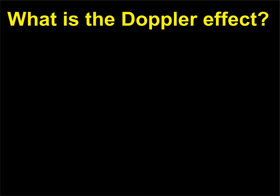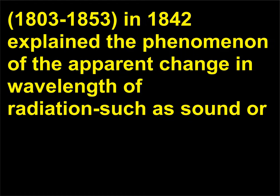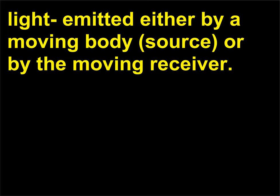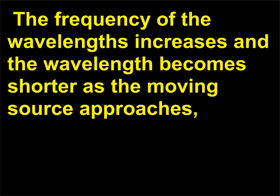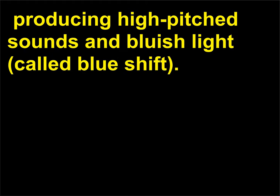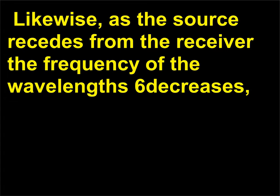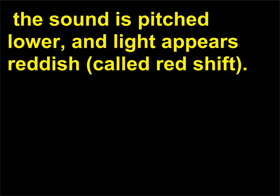What is the Doppler effect? The Austrian physicist Christian Doppler (1803–1853), in 1842, explained the phenomenon of the apparent change in wavelength of radiation such as sound or light emitted either by a moving body (source) or by the moving receiver. The frequency of the wavelengths increases and the wavelength becomes shorter as the moving source approaches, producing high-pitched sounds and bluish light, called blueshift. Likewise, as the source recedes from the receiver, the frequency of the wavelength decreases; the sound is pitched lower and light appears reddish, called redshift. This Doppler effect is commonly demonstrated by the whistle of an approaching train or the roar of a jet aircraft.